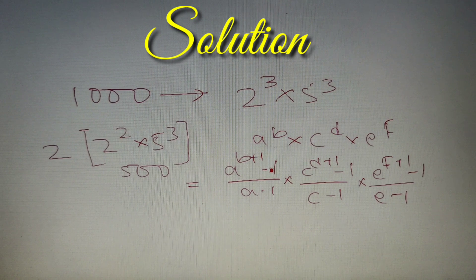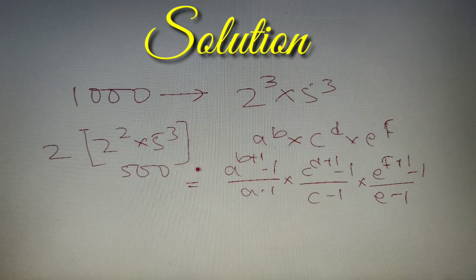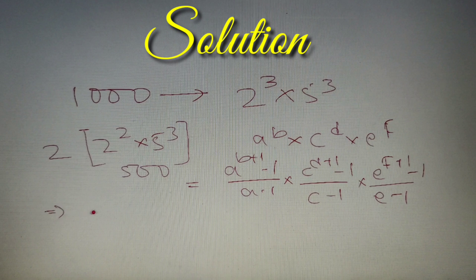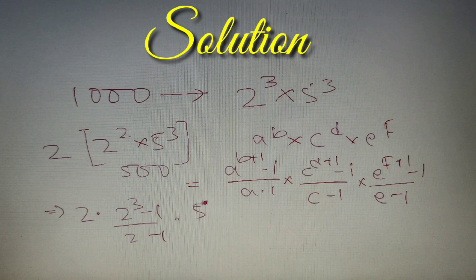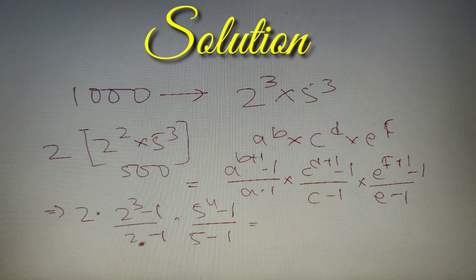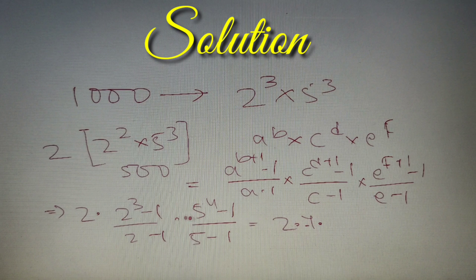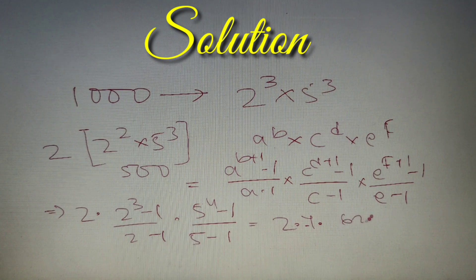So we have got the formula and we just have to put our numbers in the formula and we'll get our answer. Upon putting the numbers we'll get 2 into 2 raised power 3 minus 1 whole divided by 2 minus 1 into 5 raised power 4 minus 1 whole divided by 5 minus 1. Now 2 raised power 3 minus 1 divided by 2 minus 1 is simply equal to 7. So we'll get 2 into 7 and 5 raised power 4 minus 1 is equal to 624 and in the denominator we'll have 4.